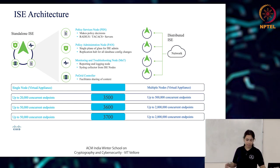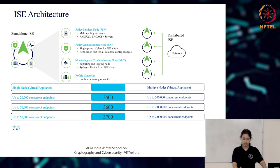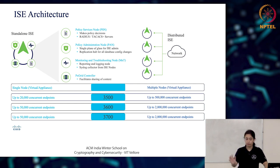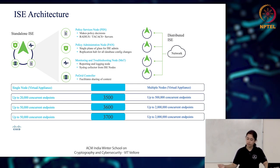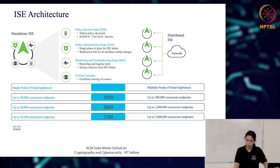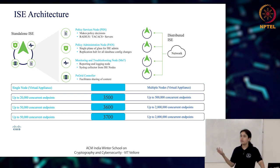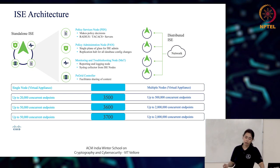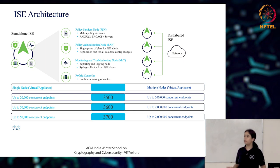You can also have the PAN and MNT on the same node while keeping PSNs separate. It's up to you how you implement it based on the size of your network, budget, and desired scalability. At the bottom of the architecture diagram, you can see the hardware models Cisco offers and for each model — standalone and distributed — how many concurrent endpoints that server can support.